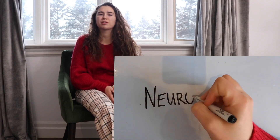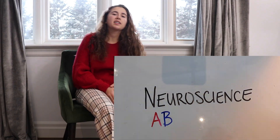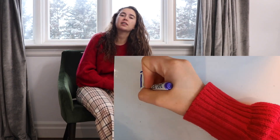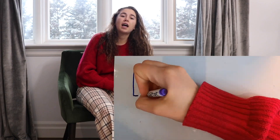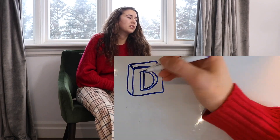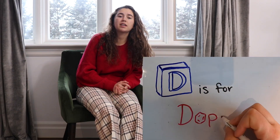Hey everybody and welcome back to NeuropsychU for another episode of Neuroscience ABCs. In today's video we're going to be discussing something that links to last week's video, and that is dopamine. Today's topic for Neuroscience ABCs is D is for dopamine. Stay tuned and we'll tell you all about what dopamine is and its role in the nervous system.